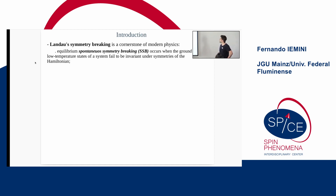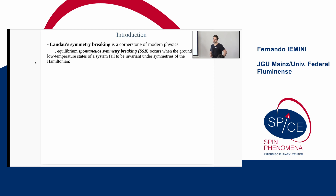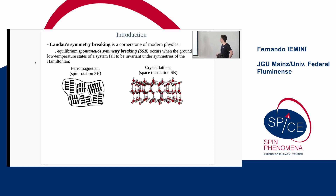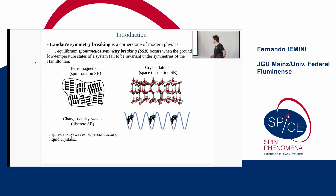The main idea behind these phases is the famous Landau symmetry breaking, one of the pillars in condensed matter physics. We know that different equilibrium spontaneous symmetry breaking phases occur in equilibrium systems when either the ground state or the low-temperature states fail to be invariant under the symmetries of the Hamiltonian. We can use this theory to describe many phases of matter — ferromagnetic states lacking spin rotation symmetry, crystal lattices with broken spatial translation symmetry, charge-density waves, superconductors, and so on.